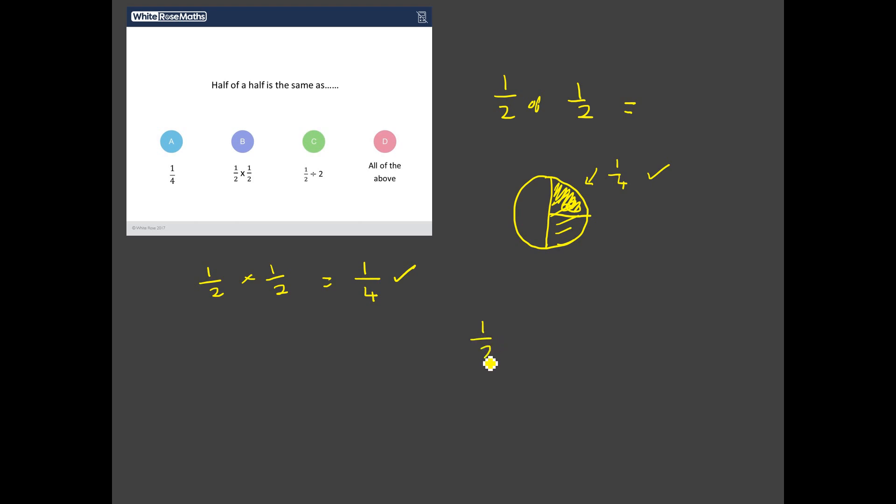When you multiply two fractions together, you multiply the numerators. One multiplied by one gives me one. Then you multiply the denominators. Two multiplied by two gives me four. So a half of a half is the same as a half multiplied by half gives a quarter. The word 'of' in mathematics often means multiply. So watch out for that one. But what about C? What about if we have a half divided by two? Is that a quarter?